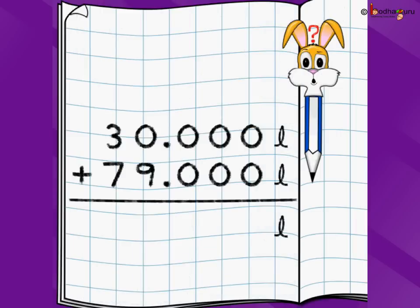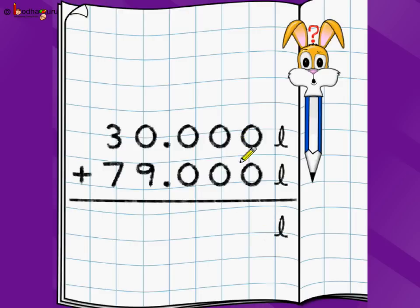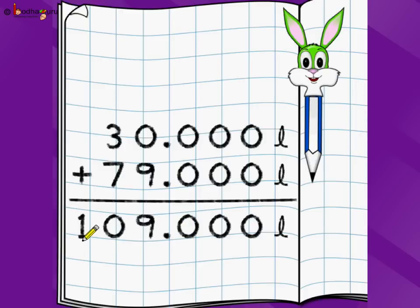Now let's come to the actual problem with decimals. The dotted line is replaced by a decimal point. So 30.000 liters plus 79.000 liters — we write one below the other and start addition from the rightmost digit. 0 plus 0 is 0, 0 plus 0 is 0, 0 plus 0 is 0, 0 plus 9 is 9, 3 plus 7 is 10. The answer is 109.000 liters, which means 109 liters. Writing numbers with decimal points below each other makes it like a five-digit addition problem.